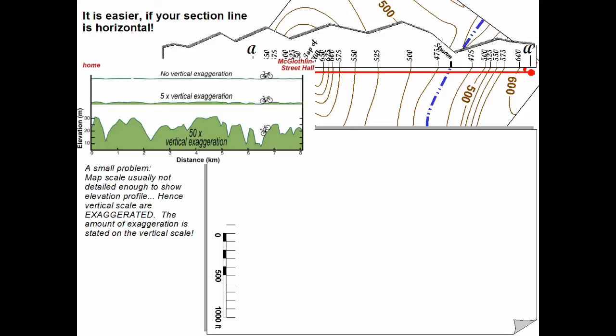Hence, we like to exaggerate the vertical scale. The amount of exaggeration is stated on the vertical scale, so people that look at the graph or the cross section you create are not surprised when you think it's a very steep terrain. They know that you have exaggerated. Well for our purposes here, and since our terrain is already pretty distinct, we just exaggerated two times. So we need twice as many tick marks on our scale.